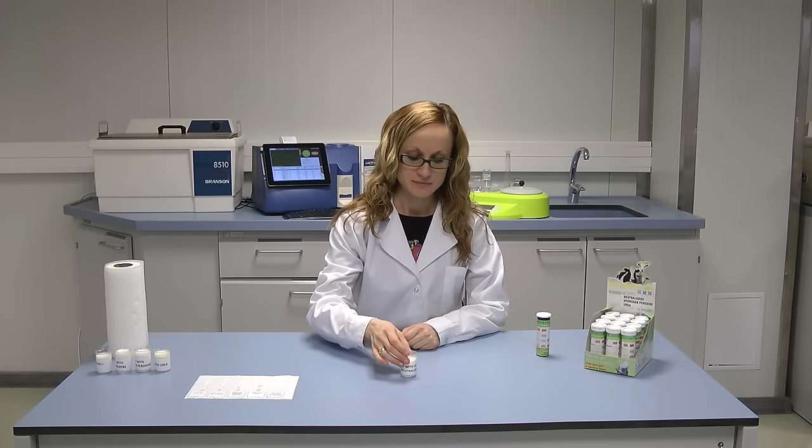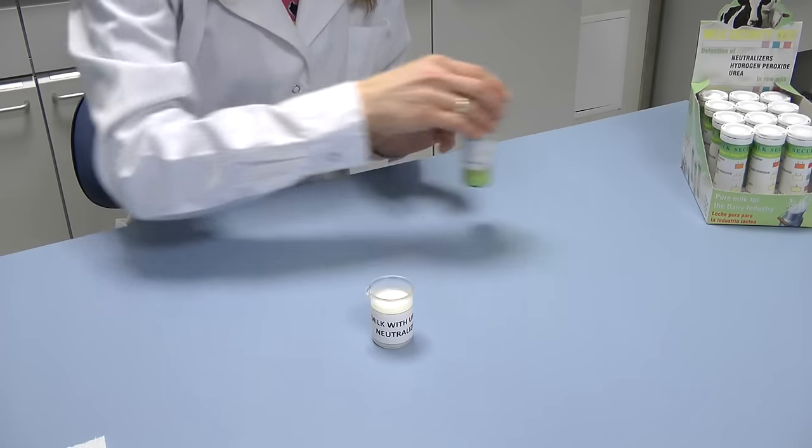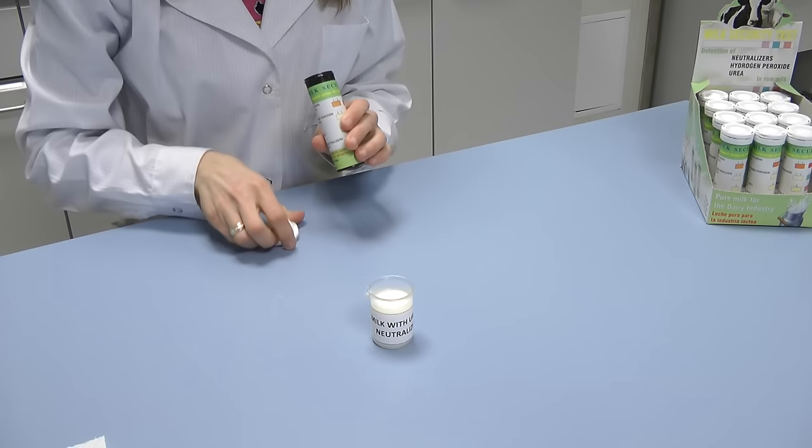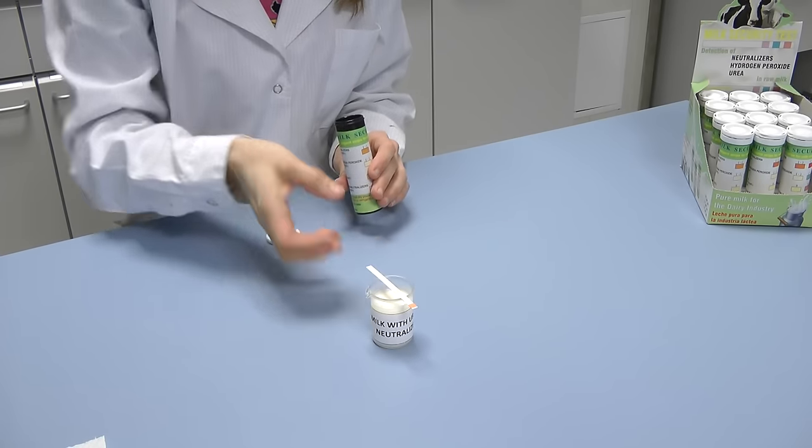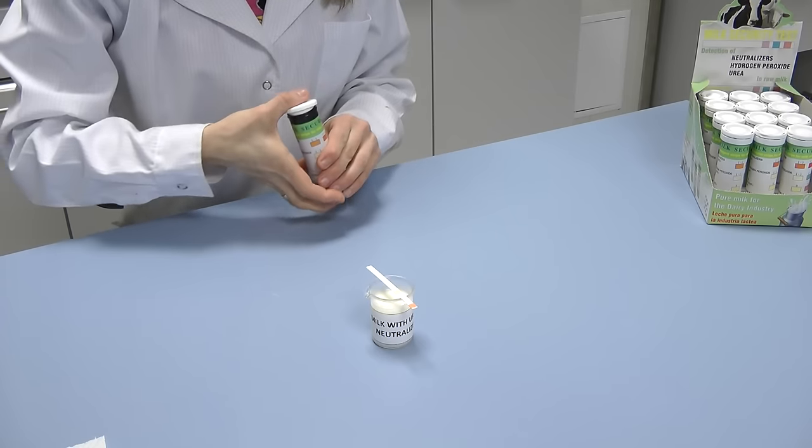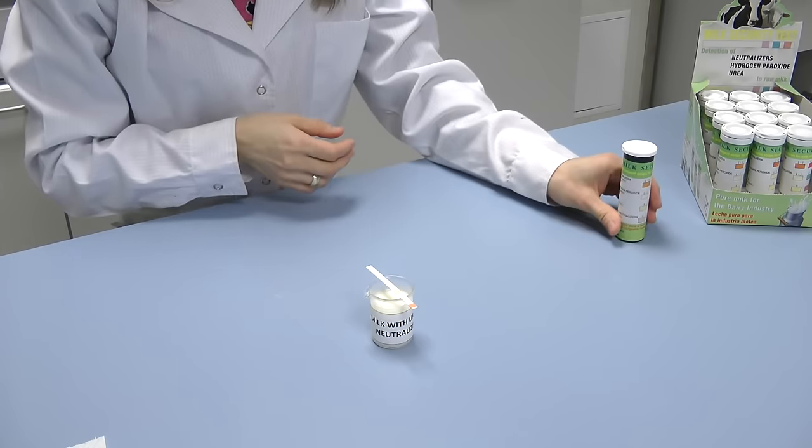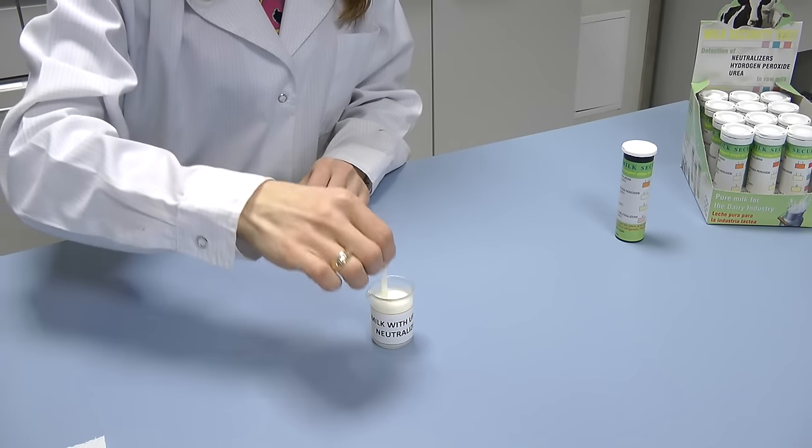Fifth sample is milk adulterated with neutralizers and urea. Neutralizers change the color of the indication area of urea. In case a positive result for neutralizers is received, the urea result must be compared with the second color scale.